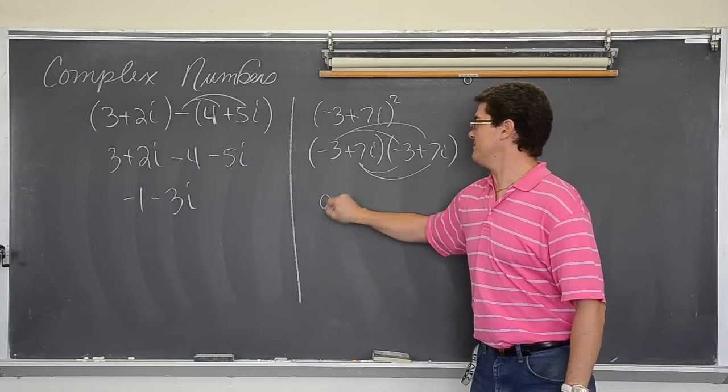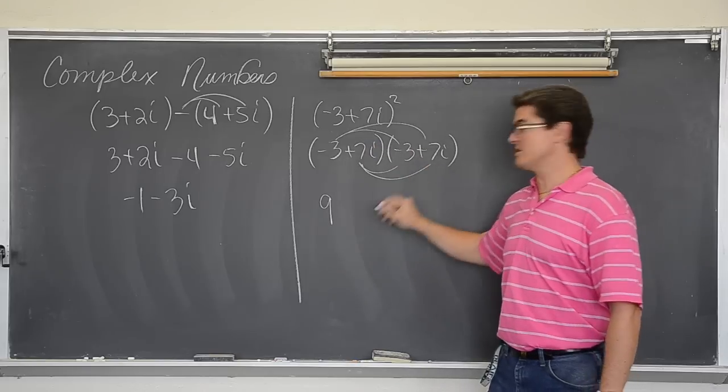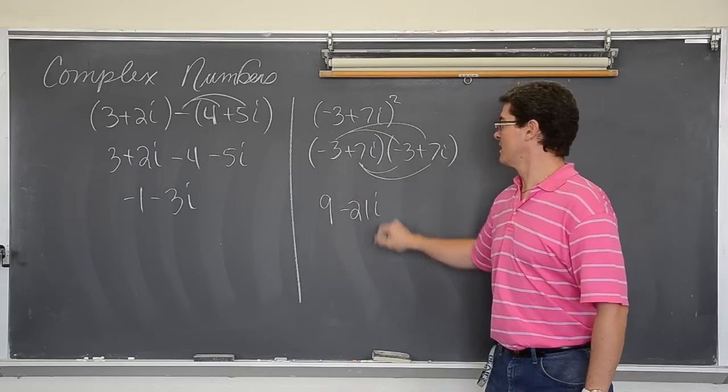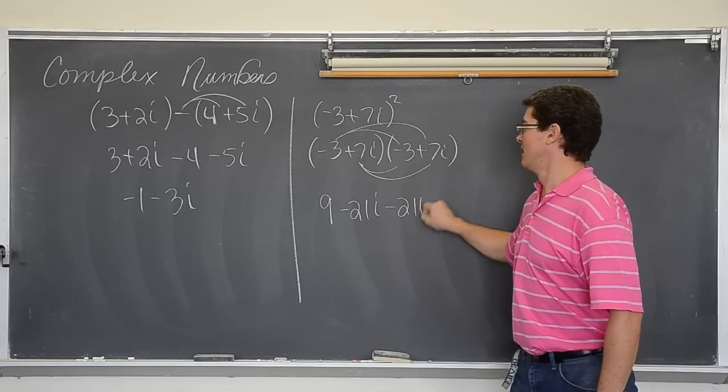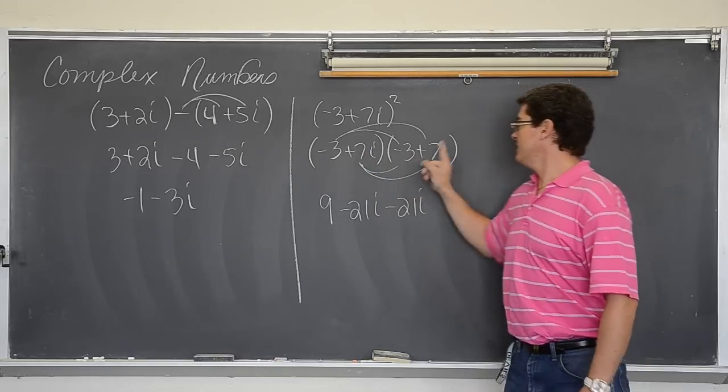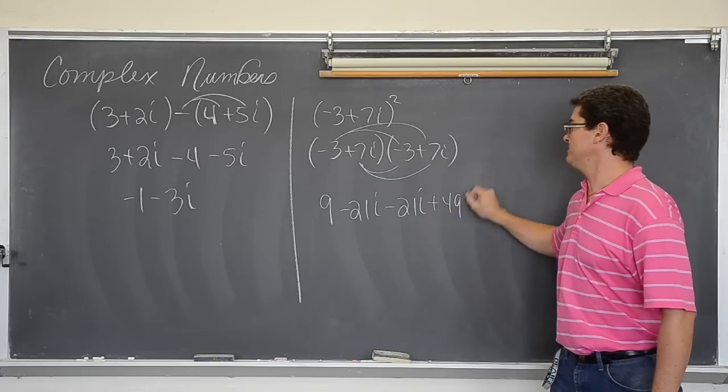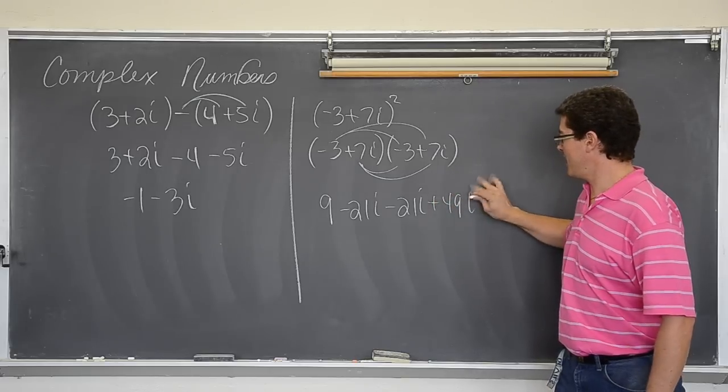Negative 3 and negative 3 is 9. Negative 3 and positive 7 is negative 21. And going to the next set of lines, negative 21 again, i. And then positive 49i squared.